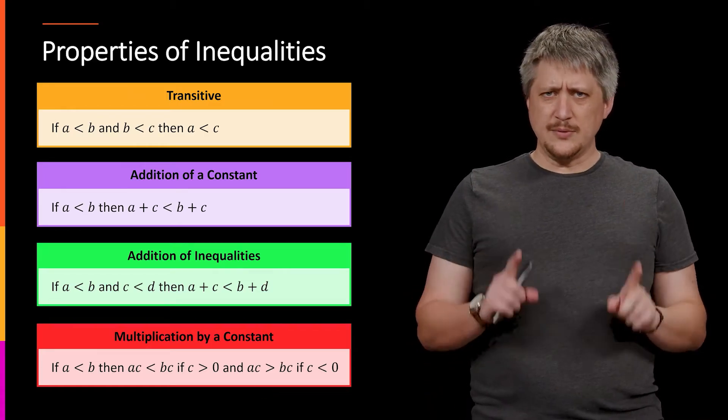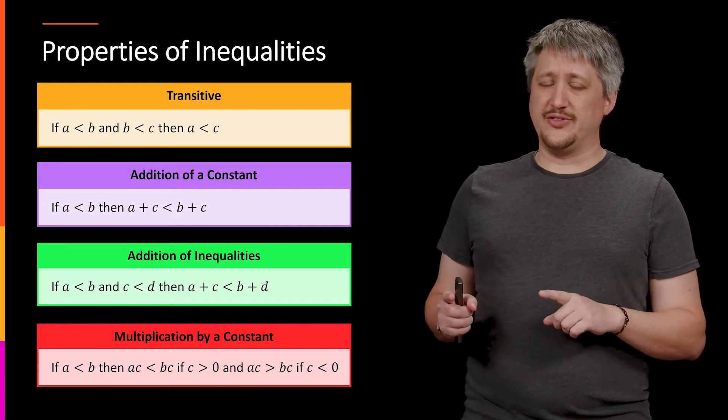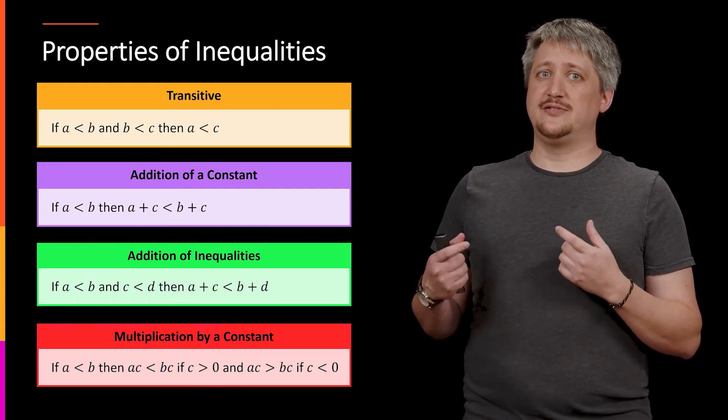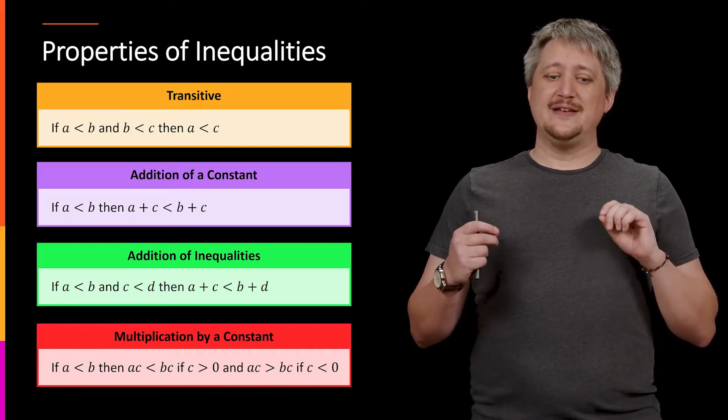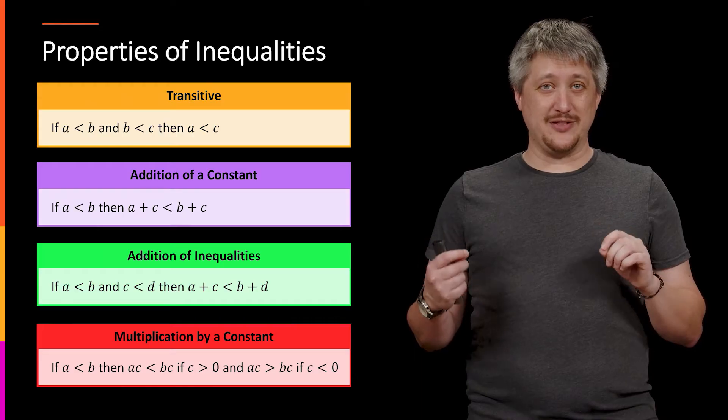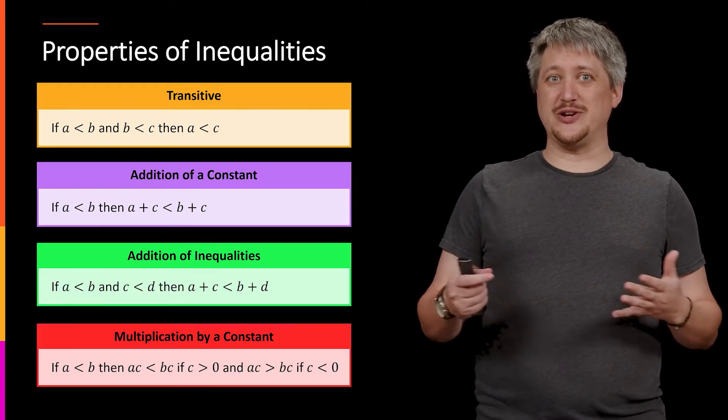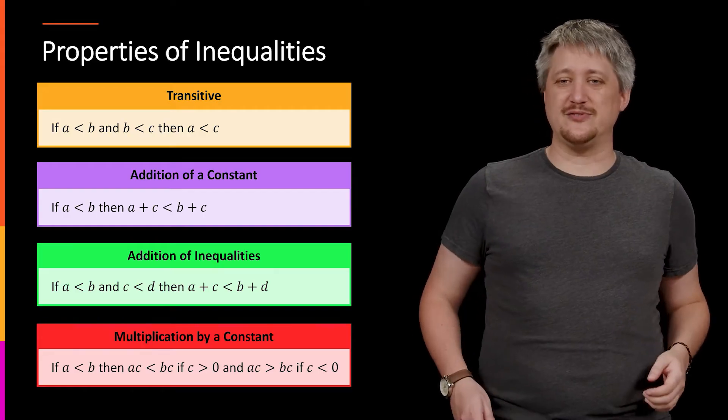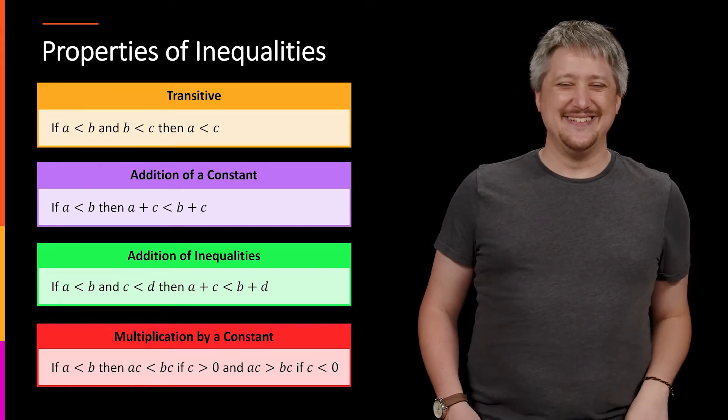So multiplying both things by a positive, everything stays the same. Multiplying both things by a negative, the sign switches. And in fact, even though we know what happens in each case, the fact that different things happen, this is something that's going to come up later as being a cause for frustration, especially when we're talking about absolute values and stuff later on. So a little bit of foreshadowing.